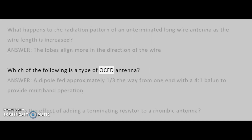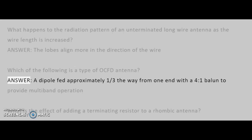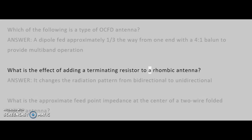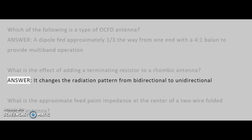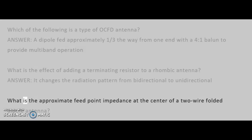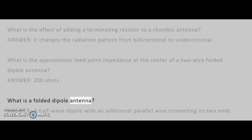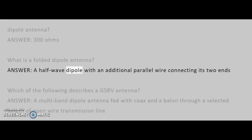Which of the following is a type of OCFD antenna? Answer: a dipole fed approximately one-third the way from one end with a 4:1 balun to provide multiband operation. What is the effect of adding a terminating resistor to a rhombic antenna? Answer: it changes the radiation pattern from bi-directional to unidirectional. What is the approximate feed point impedance at the center of a two-wire folded dipole antenna? Answer: 300 ohms. What is a folded dipole antenna? Answer: a half-wave dipole with an additional parallel wire connecting its two ends.